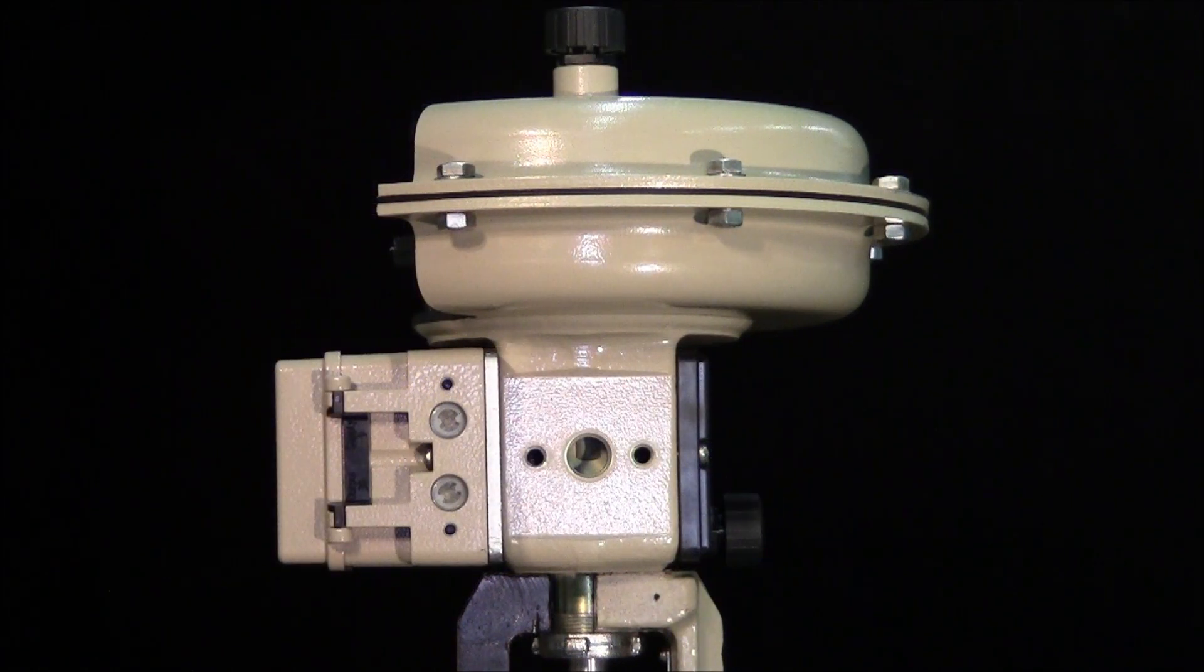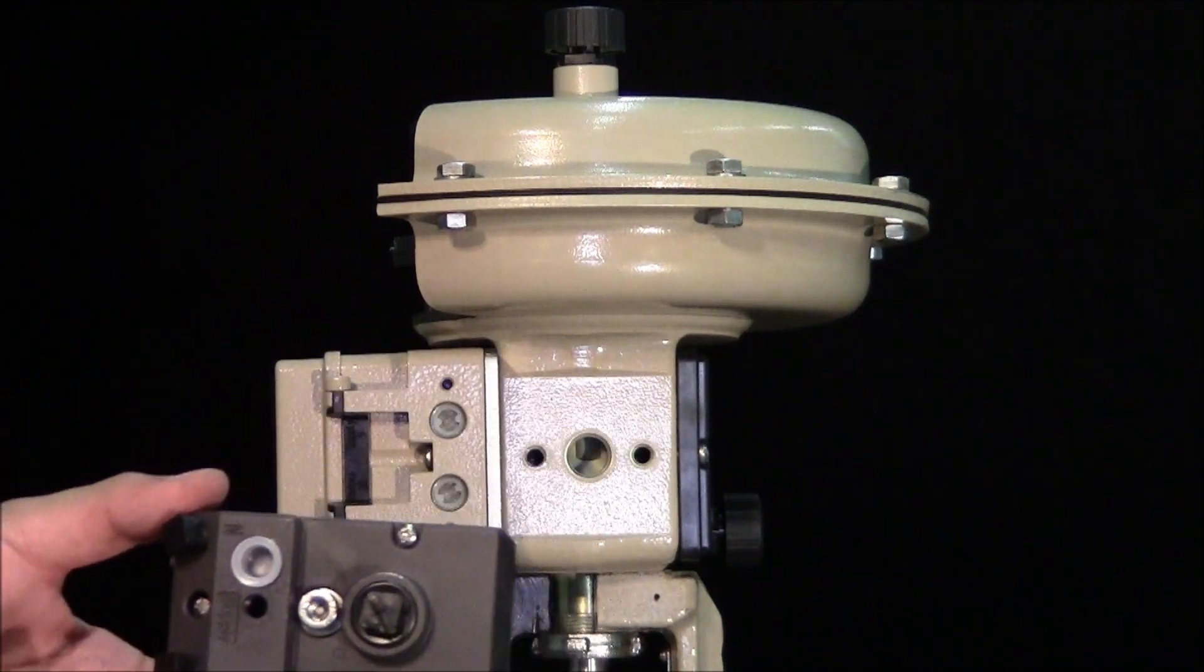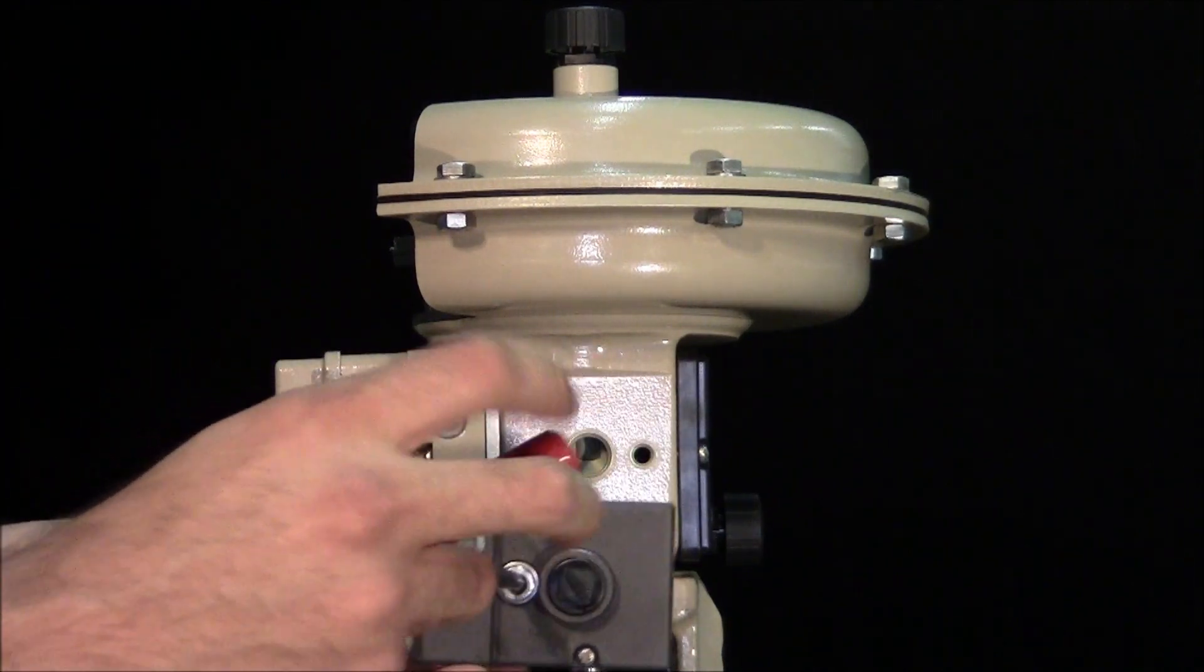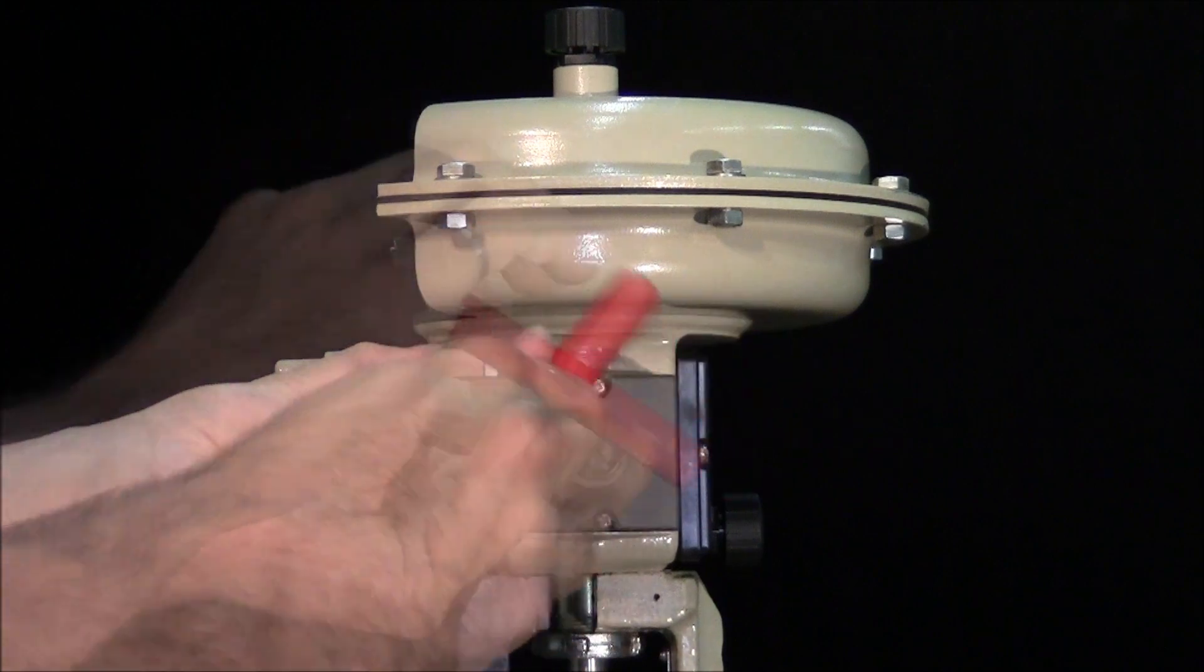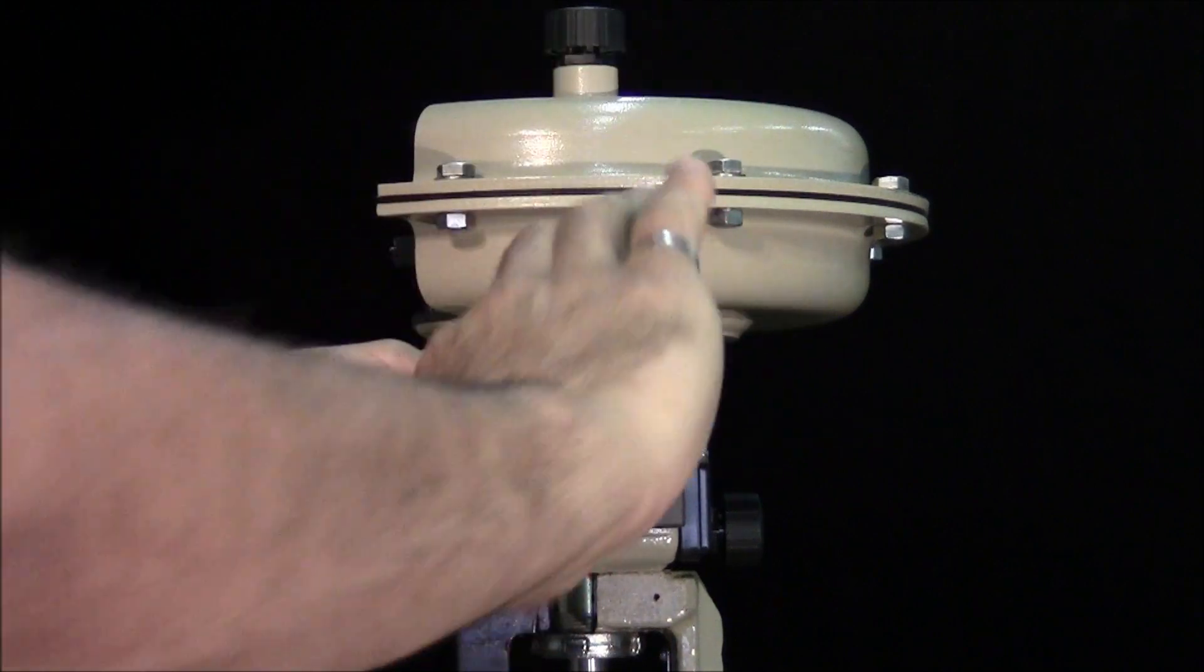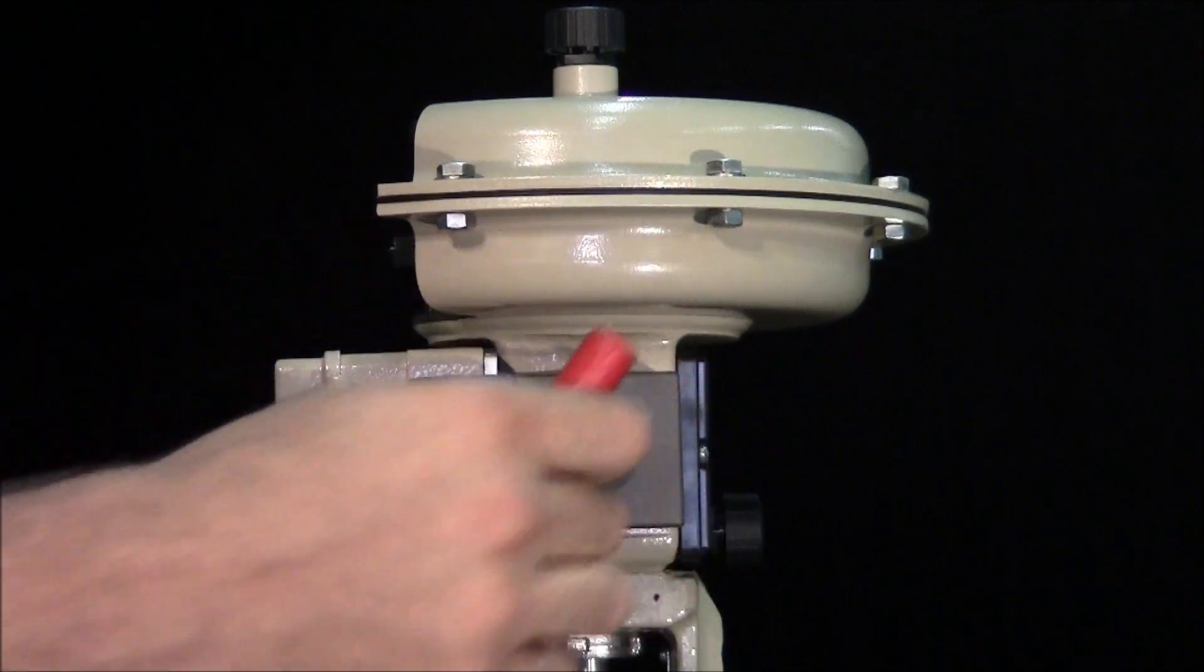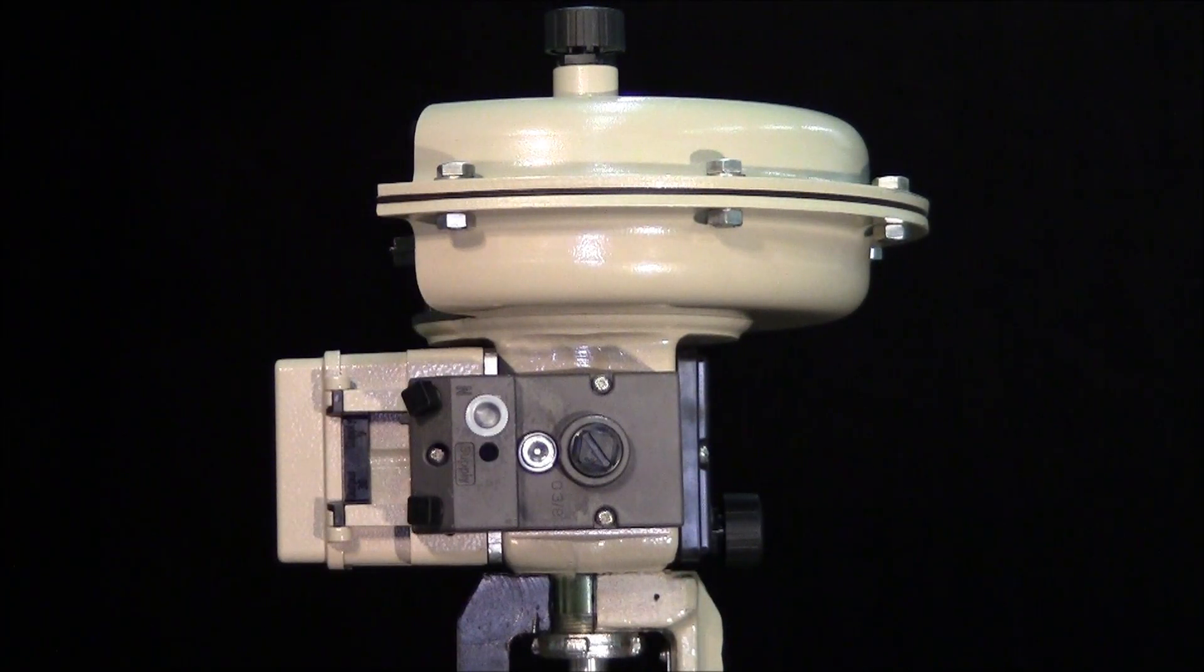As our actuator fails closed upon loss of air supply, we can use a connecting block to eliminate the need for tubing between the positioner and actuator. Securely mount the block, making sure all O-rings are in place.